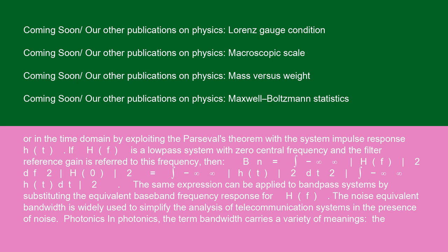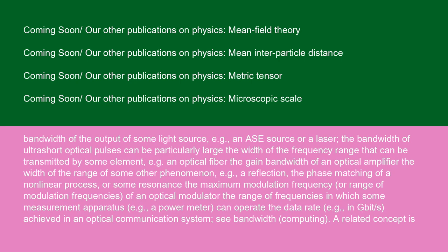Photonics: in photonics, the term bandwidth carries a variety of meanings. The bandwidth of the output of some light source, e.g., an ASE source or a laser. The bandwidth of ultra-short optical pulses can be particularly large the width of the frequency range that can be transmitted by some element, e.g., an optical fiber the gain bandwidth of an optical amplifier the width of the range of some other phenomenon, e.g., a reflection, the phase matching of a nonlinear process, or some resonance the maximum modulation frequency or range of modulation frequencies of an optical modulator the range of frequencies in which some measurement apparatus, e.g., a power meter, can operate the data rate, e.g., in bit slash s, achieved in an optical communication system.